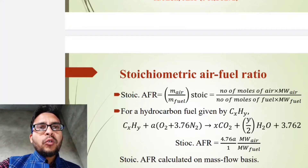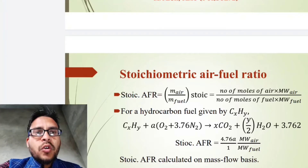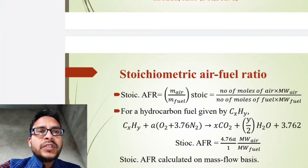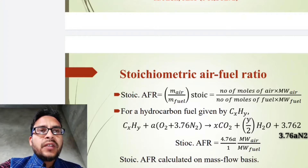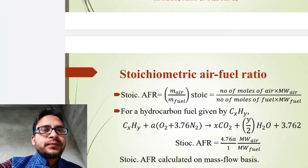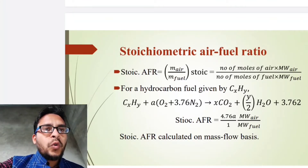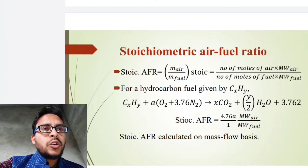How to calculate stoichiometric air-fuel ratio? If you want to calculate stoichiometric air-fuel ratio, the procedure is as follows. For a hydrocarbon fuel given as CₓHᵧ, we can calculate the stoichiometric air-fuel ratio by writing this equation, known as the stoichiometric relation: CₓHᵧ + A(O₂ + 3.76 N₂) = x CO₂ + (y/2) H₂O + 3.76A N₂.